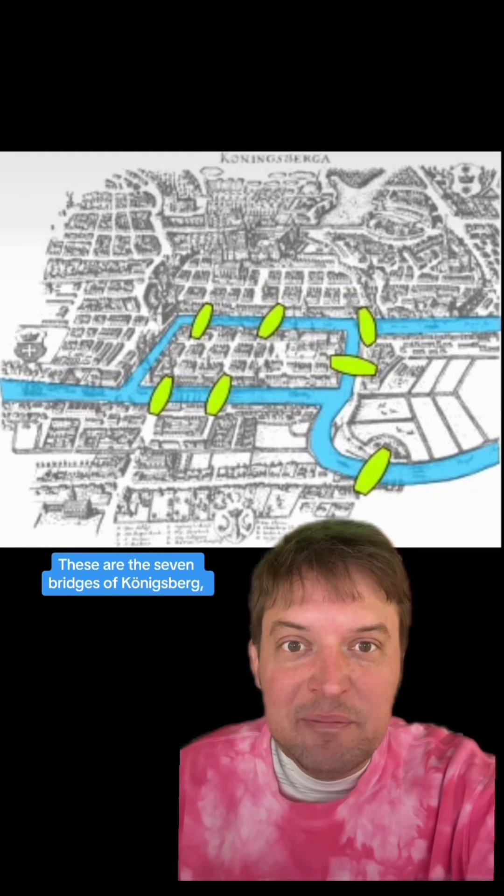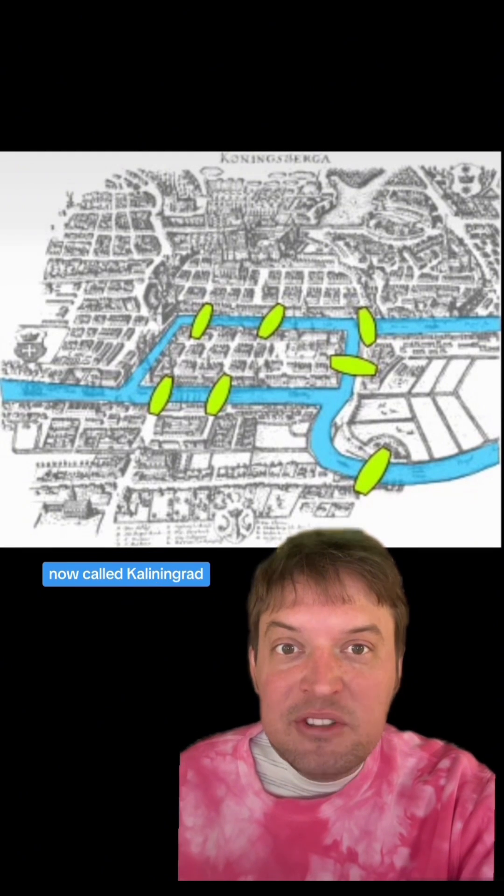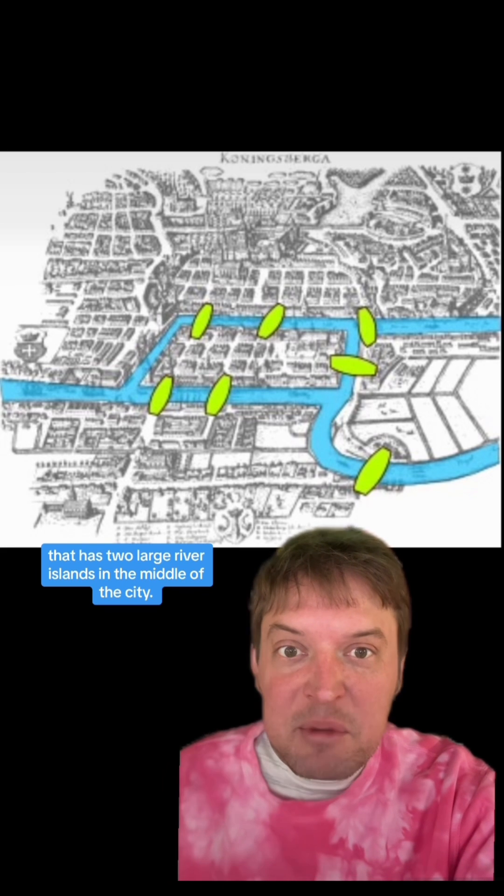These are the seven bridges of Konigsberg. It's a city on the Pregel River, now called Kaliningrad, that has two large river islands in the middle of the city.